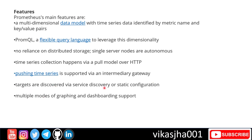Targets are discovered via service discovery or static configuration. When you install an agent on a new target system, you can either update the configuration file to tell Prometheus about the new server, or rely on service discovery to discover it automatically. For graphing and dashboarding, Prometheus supports multiple modes — you can use Grafana, or your own custom web application using client APIs. Grafana is the more suitable option.